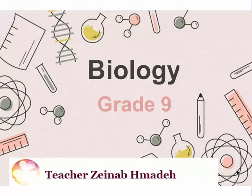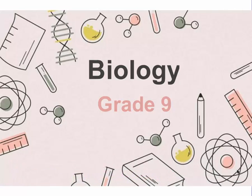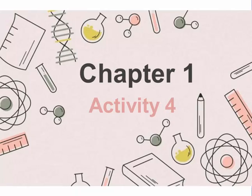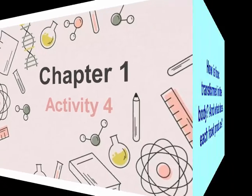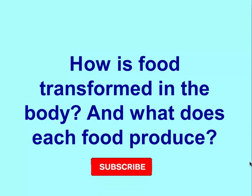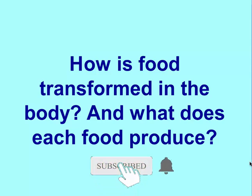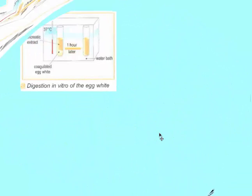Welcome to a new summary for a new activity in biology of grade 9. This summary will talk about chapter 1 activity. The question in this activity is: how is food transformed in the body and what does each food produce?